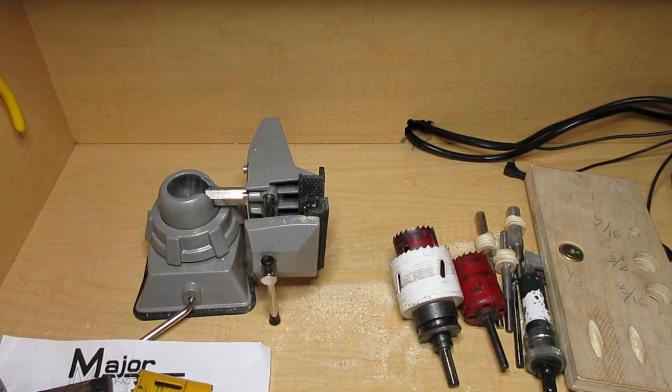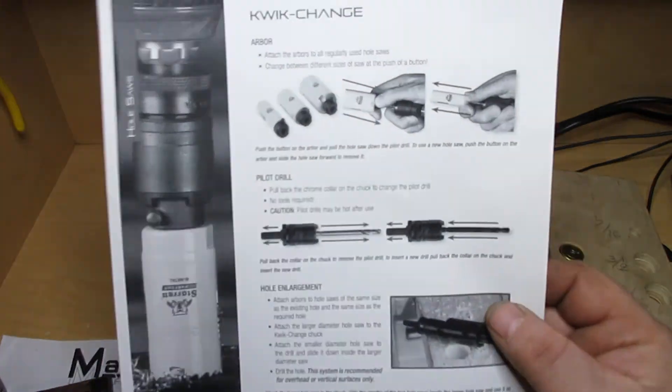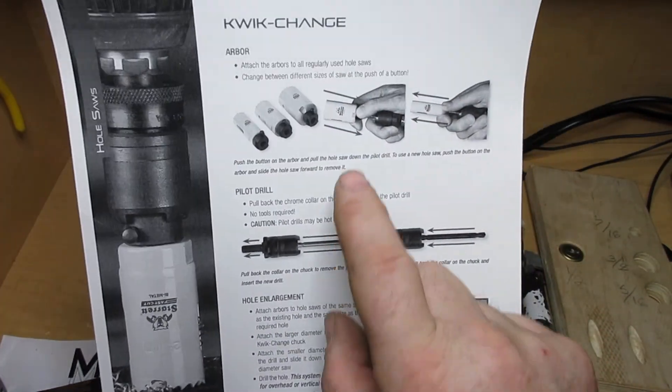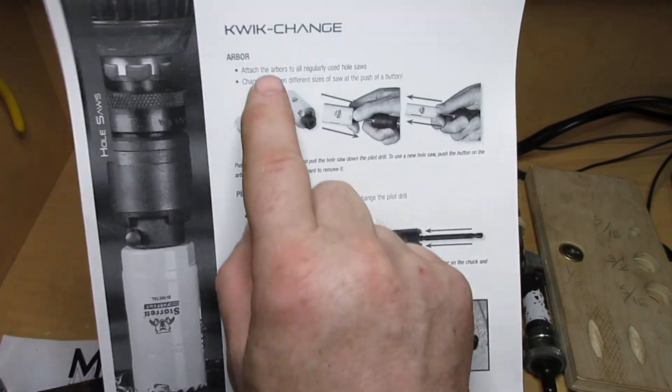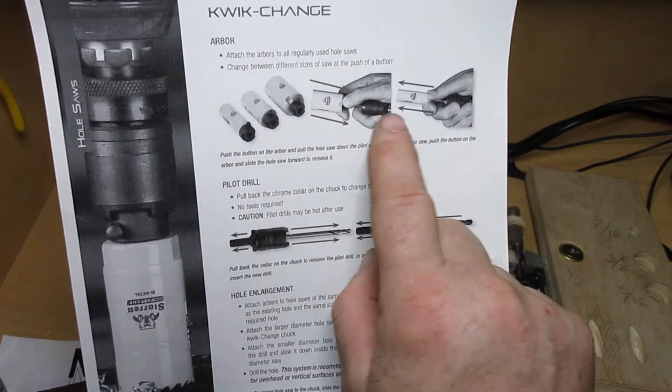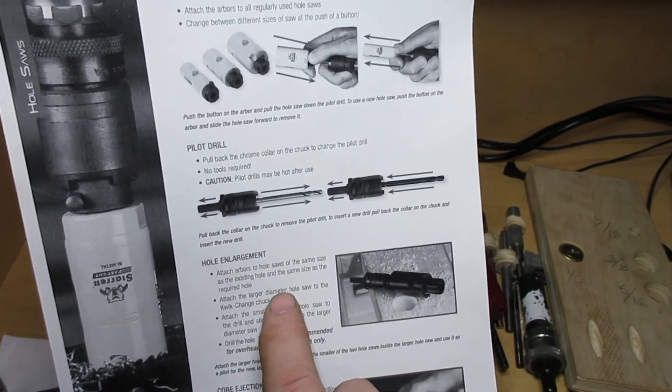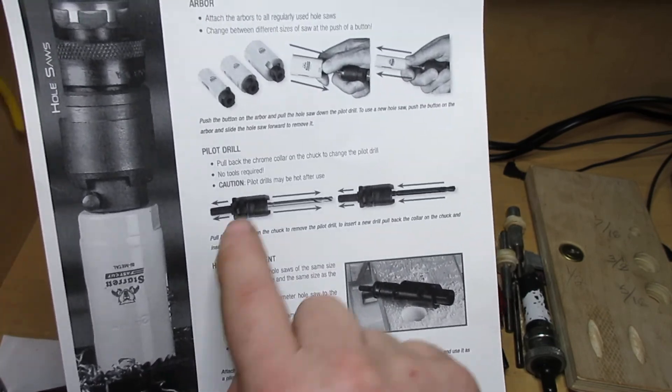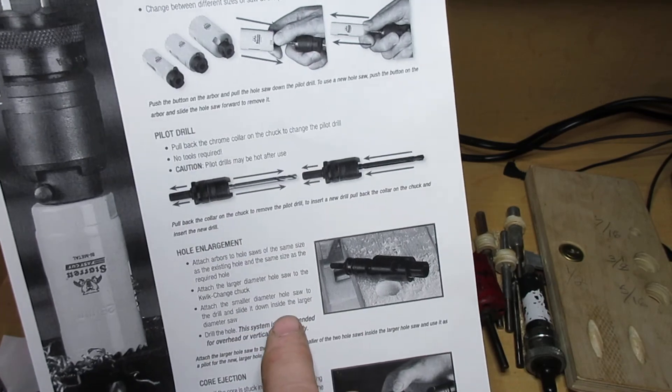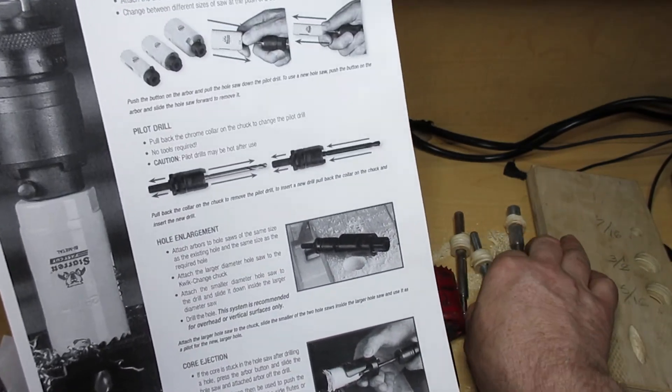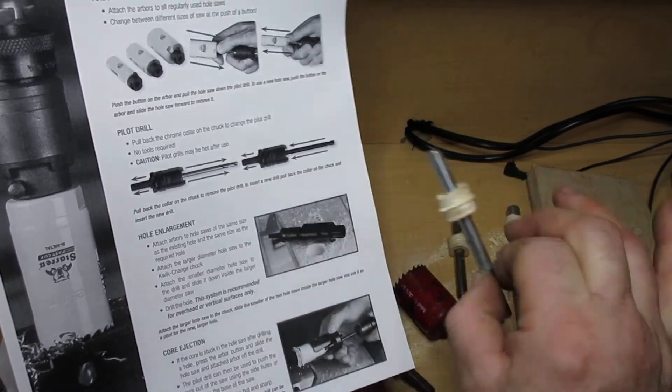But as I say, if you use that system you have to make sure your initial hole is accurate or else you'll make another inaccurate hole. Now another thing I found, and I will be trying to get a hold of these, is actually Starrett makes in their quick change arbor, they make a hole enlargement arbor system. I'm going to definitely try to get a hold of that and see how well that works as opposed to my style arbors that I made.